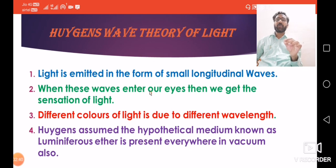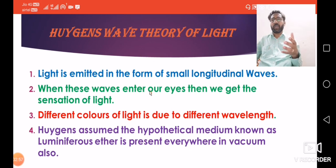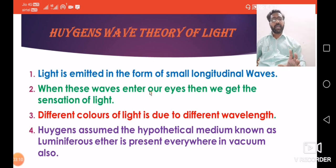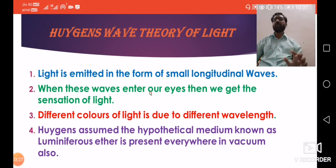As we know, sunlight comes from the sun to the earth, but there is no continuous medium between them. Huygens thought about how light could travel, so he assumed a hypothetical medium and gave it the name luminiferous ether. He said this medium is present everywhere — in solids, liquids, gases, and in vacuum also. Light waves travel through this luminiferous ether medium.